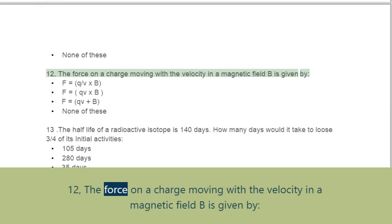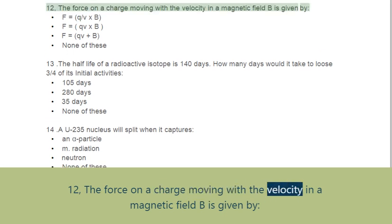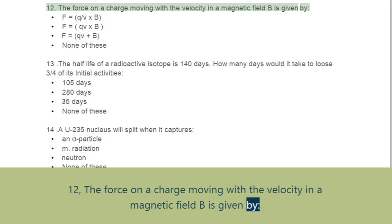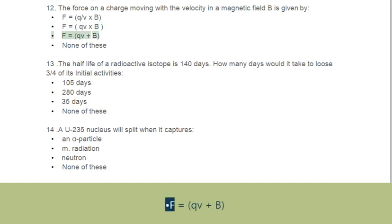Question 12: The force on a charge moving with velocity v in a magnetic field B is given by. Options: A. F = qv×B, B. F = qv×B, C. F = qv + B, D. None of these.